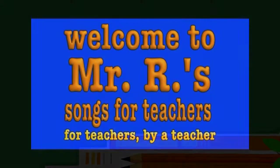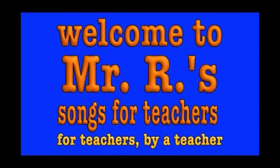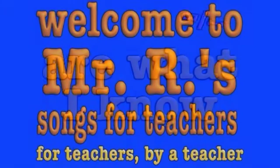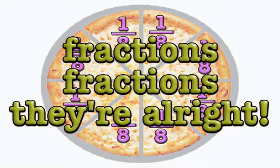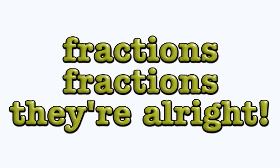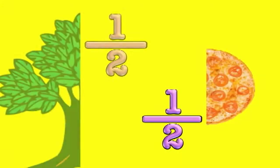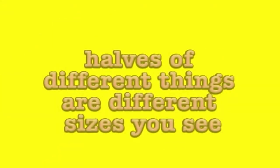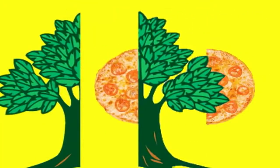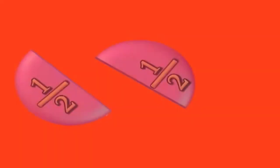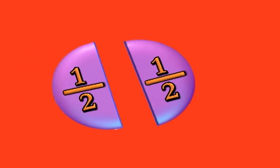The following is an example of one of the videos. I know they're equal pieces, they're parts of a pie. Fractions, fractions, they're all right. Half a pie, half a tree — halves of different things are different sizes, you see. But a half is a half, big or small. It takes two halves to make one whole. Fractions are equal-sized parts of a whole. When it comes to halves, there are two equal-sized parts that make up one whole. Now try to say these fractions.